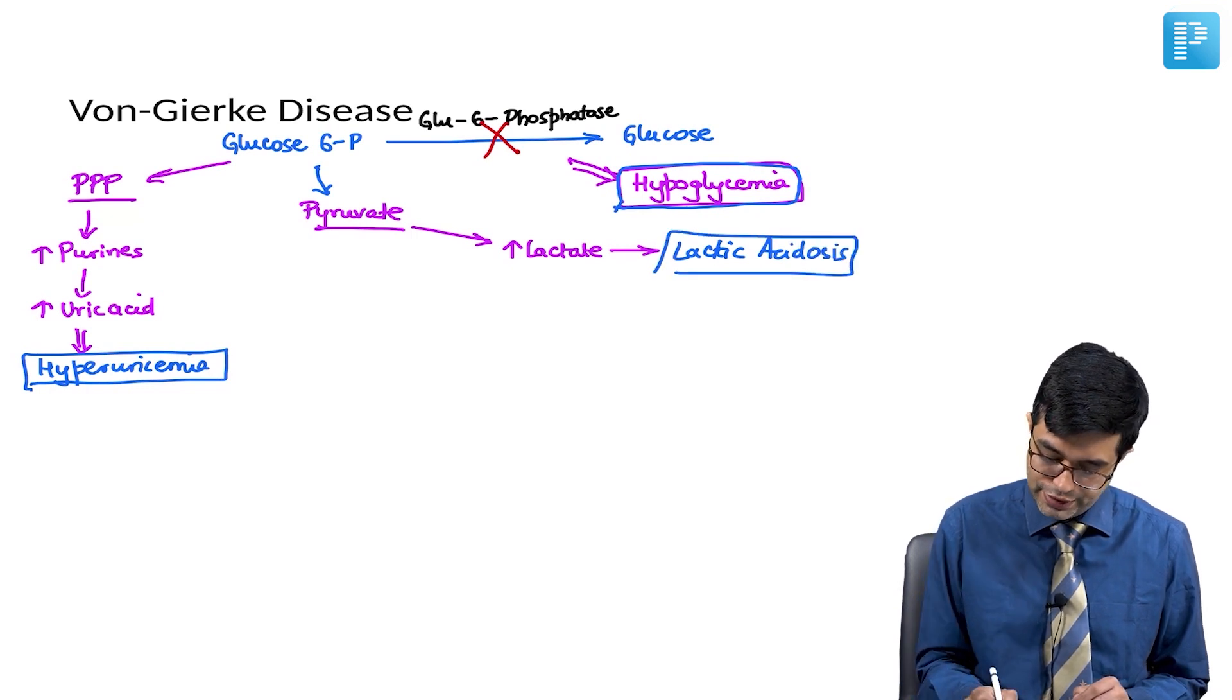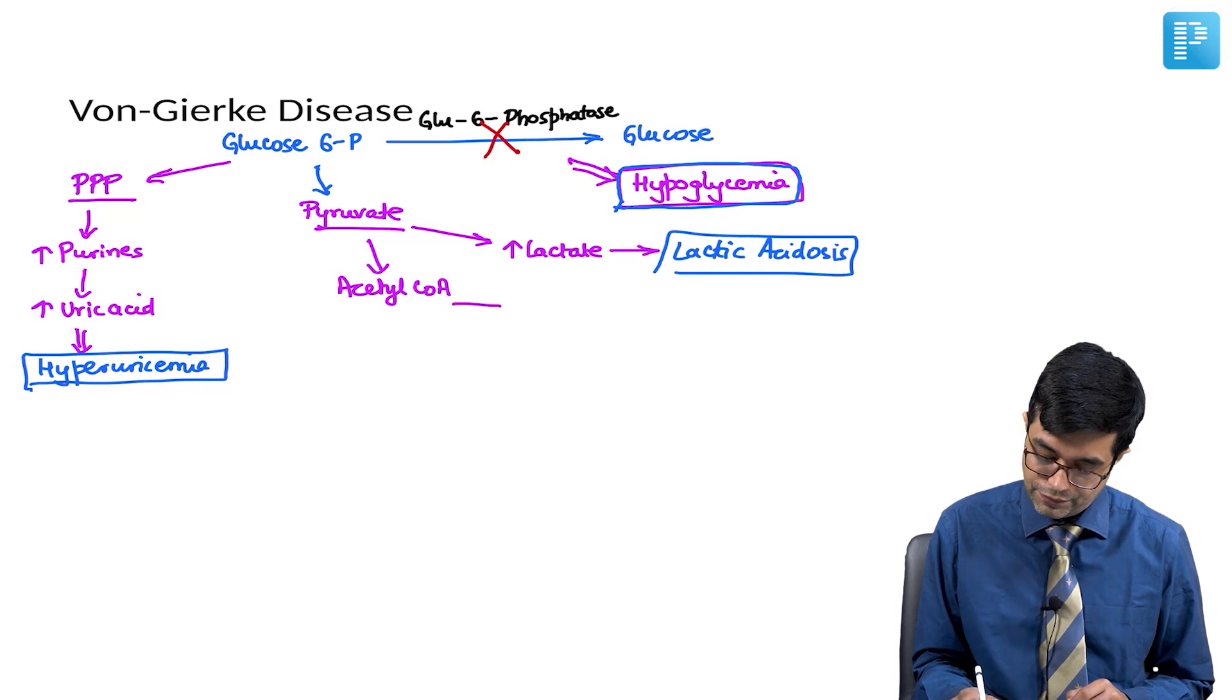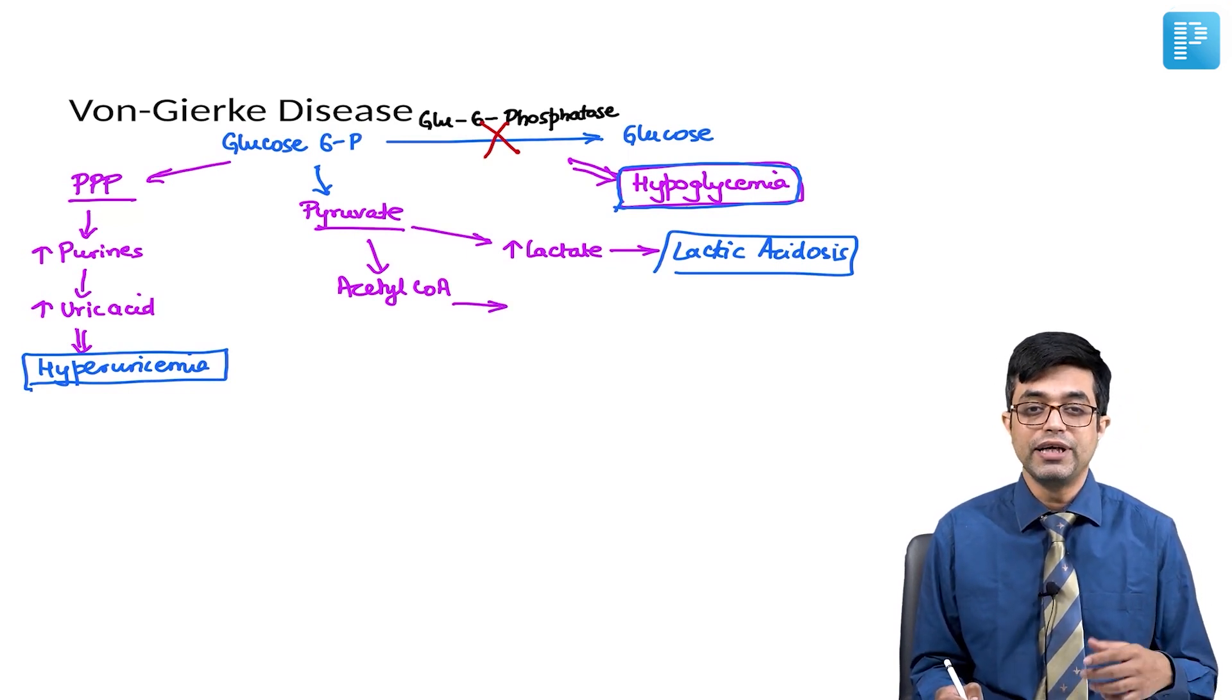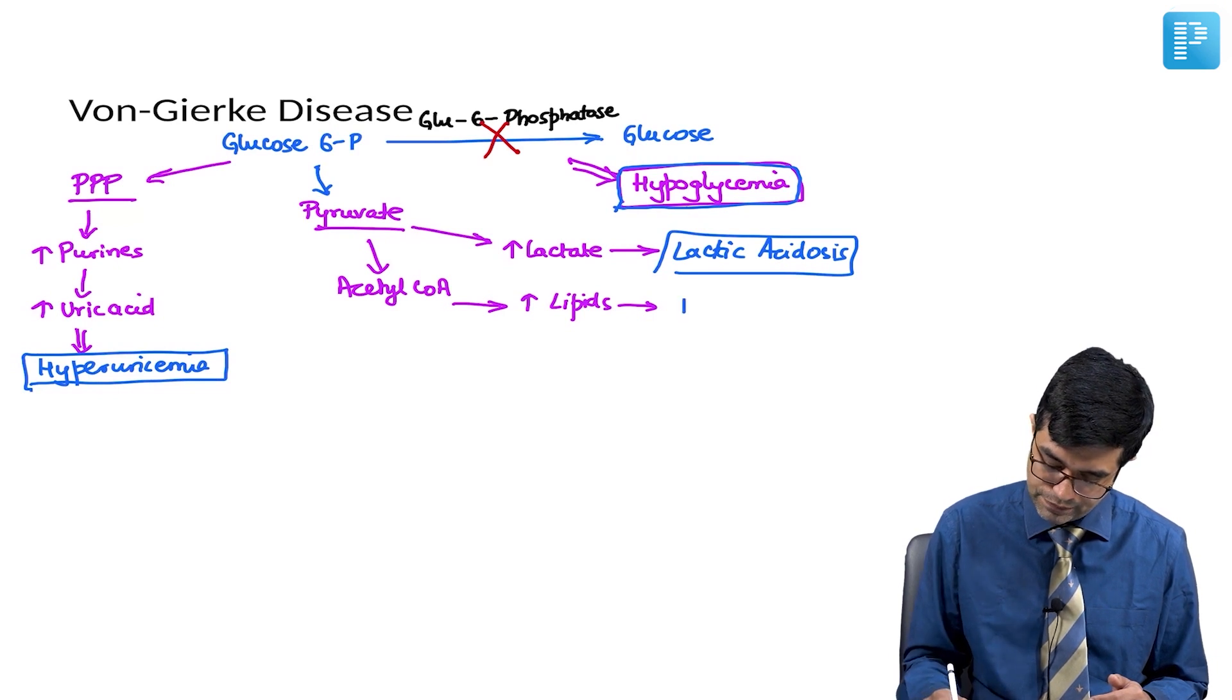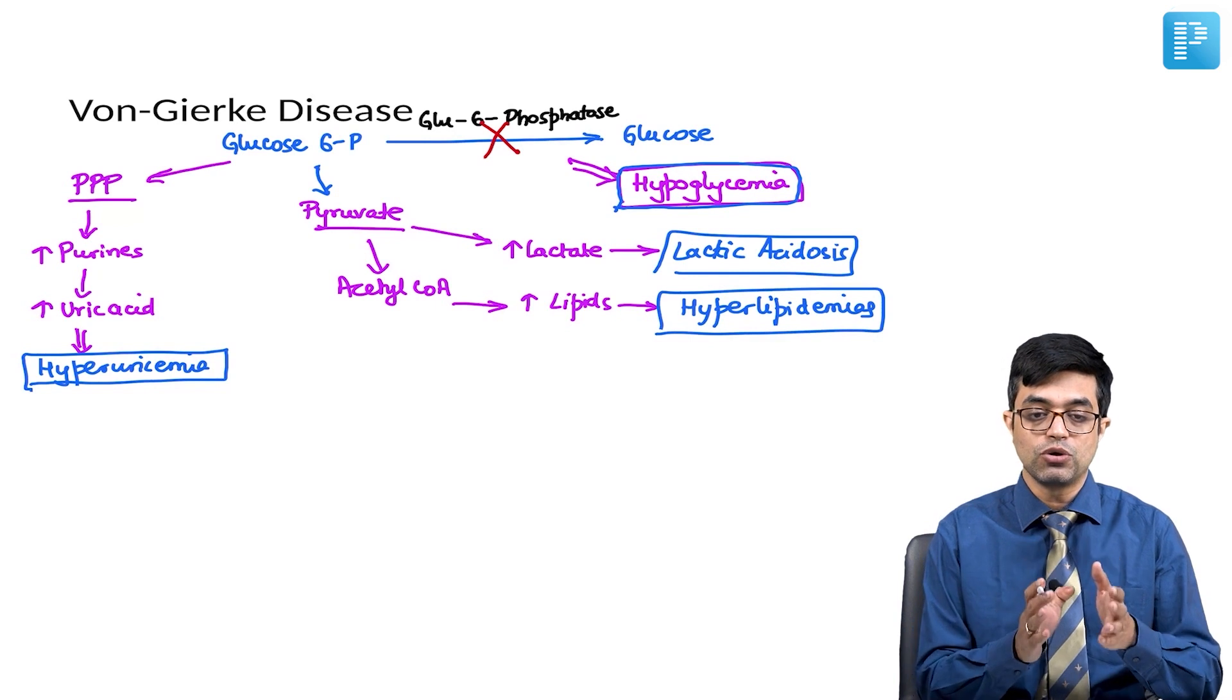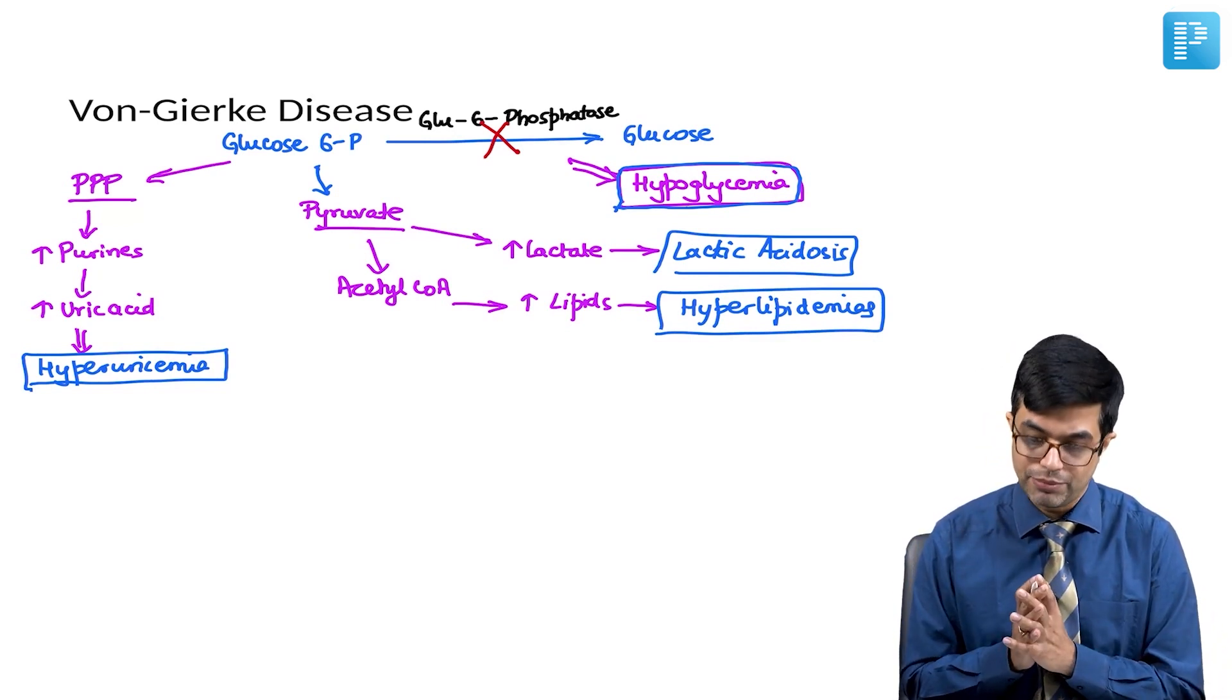This pyruvate will also get converted into acetyl coenzyme A. This acetyl coenzyme A will be diverted towards the lipogenesis pathway. It will form increased amounts of lipids. So, increased lipid formation will happen which will cause hyperlipidemias. It is mainly the hypertriglyceridemia which is seen in these patients. So, hyperlipidemia. So, you have hypoglycemia, hyperuricemia, lactic acidosis, and hyperlipidemias.